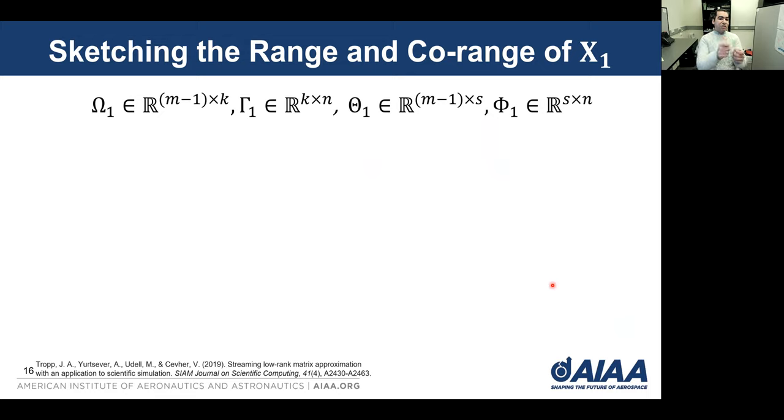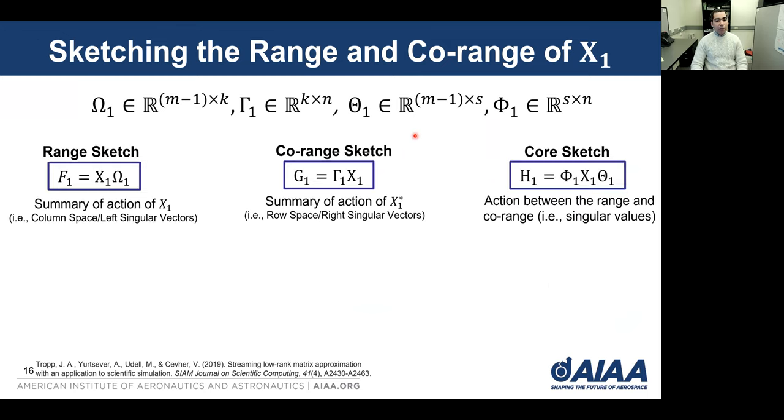Now we push this sketching to another limit. Instead of focusing only on the range, we can consider sketching the range and the co-range of X1. We define four random matrices here, and from them we obtain three sketches. The first is the range sketch, similar to what we did before. Second is a co-range sketch. Third is a core sketch, which mainly gives more information about the relation between the range and co-range, which is useful in approximating singular values that we need in our DMD algorithm.